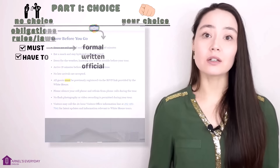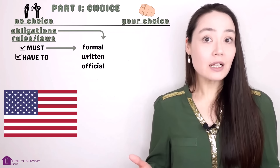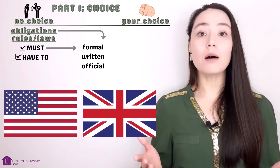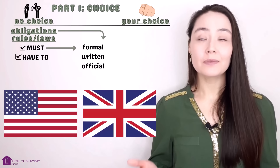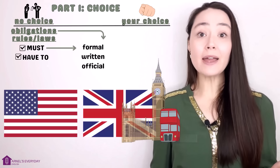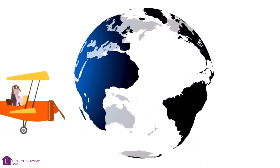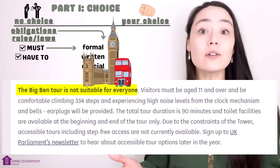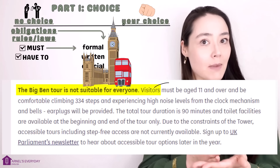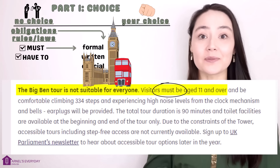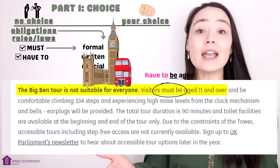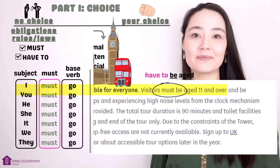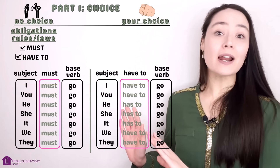Here's a common question: is this American English or British English? Both must and have to are common everywhere. Let's say you want to visit Big Ben in London. The Big Ben tour is not suitable for everyone — 'Visitors must be aged 11 and over.' 'Visitors have to be aged 11 and over' is also perfectly correct, but again, this is written English.